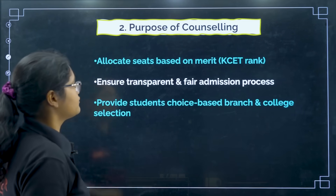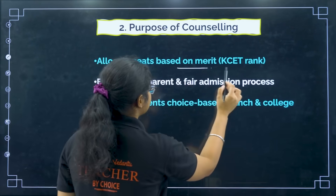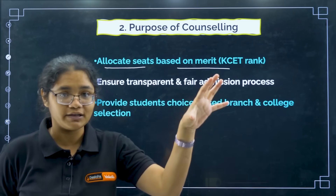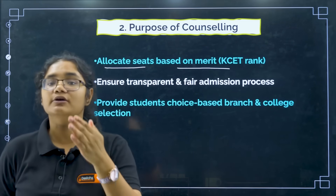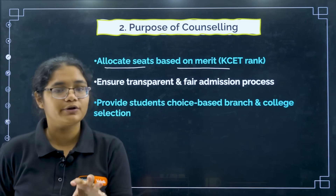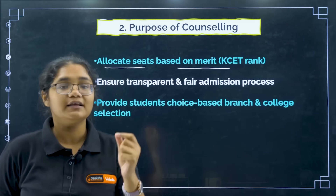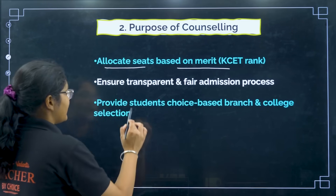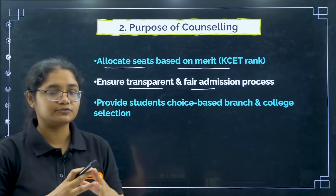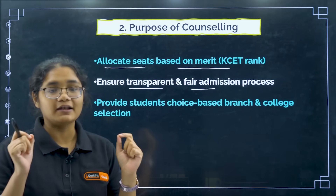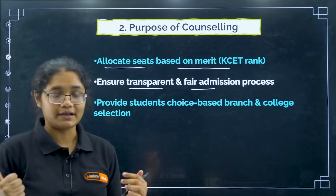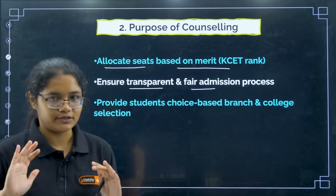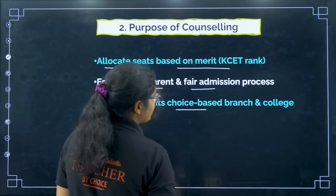The purpose of counselling is to allocate seats based on merit — your KSA rank. If a student has got a very good rank, they deserve a top college. If not, they get a more appropriate college. This ensures a transparent and fair admission process — no cheating, no corruption. Based on your merit and your rank, you will be getting your college.